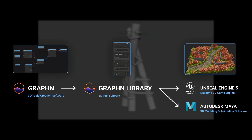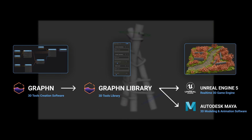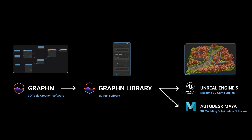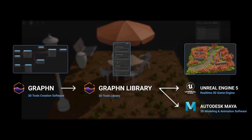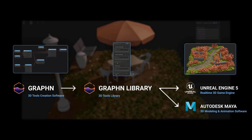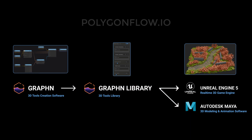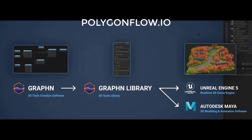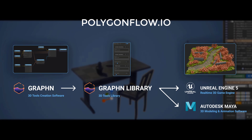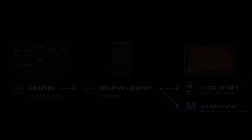You could, for example, make a really kickass tool and sell it on Gumroad, or just share it with your Discord community. You can try Graphen completely for free — just head over to Polygonflow.io and hit download. With that said, let's get started.